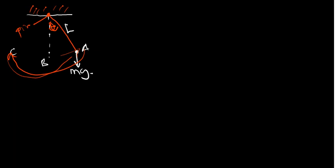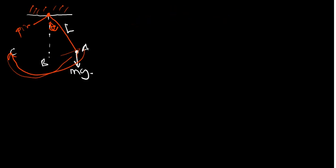In simple terms, period is given by the time over the number of oscillations or the number of cycles. Then frequency is just basically one over the period. But there are some times where we can't use these formulas — we have been given some other values, like maybe the gravity and everything. Now, another formula for the period under the physical pendulum.